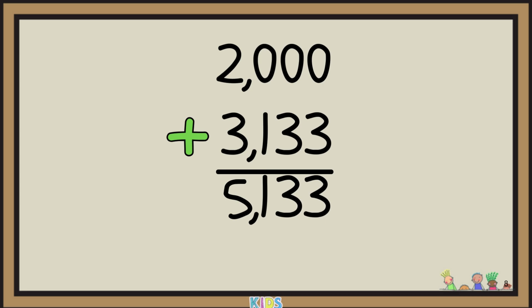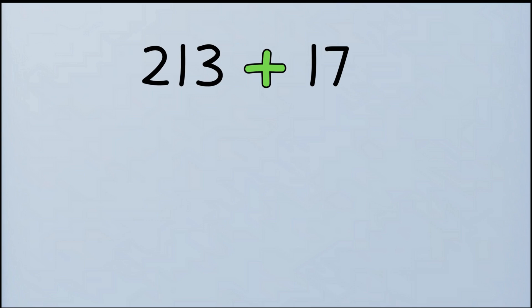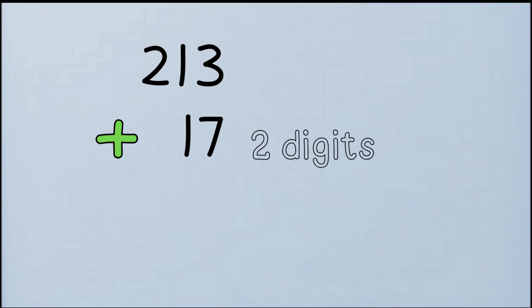That was much easier than counting them one by one, right? Try this, 213 plus 17. First, stack them. Put 213 on top and 17 below it. Wait, 17 has only two digits.